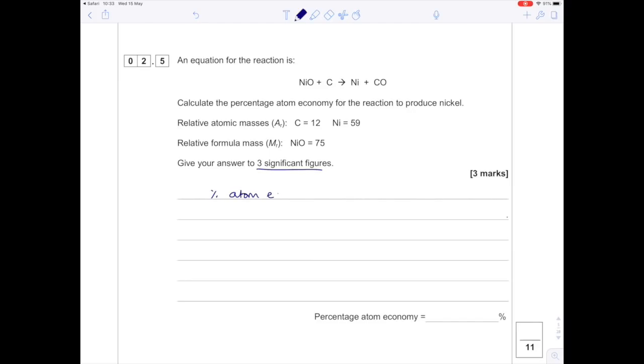Calculate the percentage atom economy for the reaction to produce nickel. Percentage atom economy is the MR of the useful product over the MR of the reactants times by 100. We're looking to produce nickel with MR of 59. The MR of reactants is nickel oxide (75) plus carbon (12). So 59 over 87 times 100 equals 67.8% to 3 sig figs.